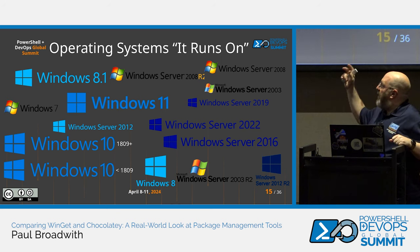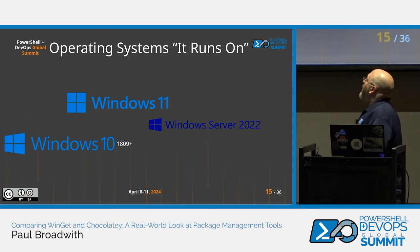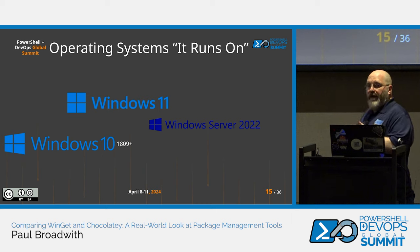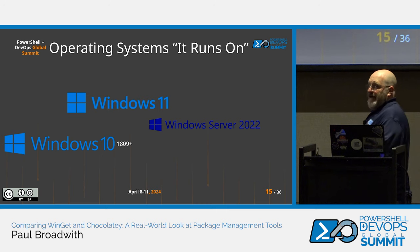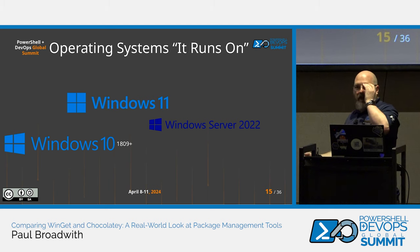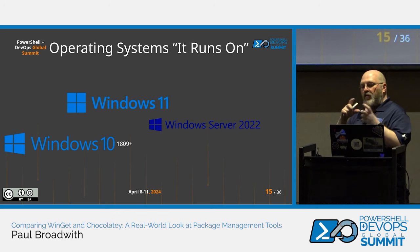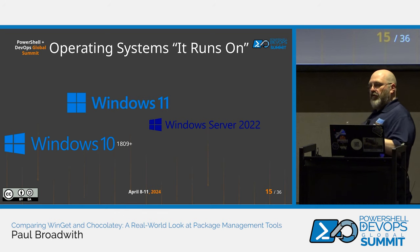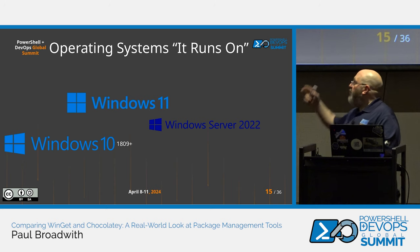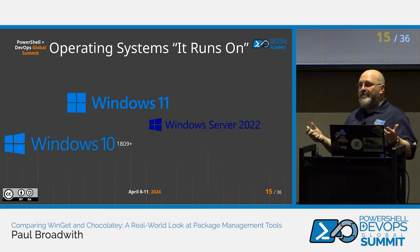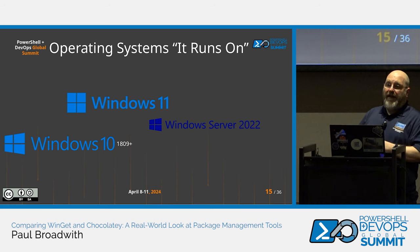WinGet, on the other hand, will only run on Windows 10 1809 or later — that's the minimum supported version. There is experimental support for Windows Server 2022, and while it seems to partially work, it's still unsupported. Future versions will probably add support, but if you're running Windows Server operating systems or older client operating systems, WinGet may not be an option for you.